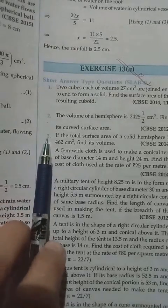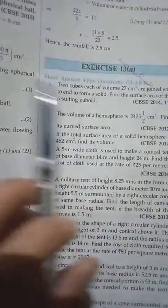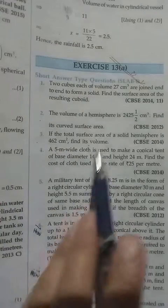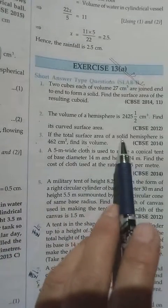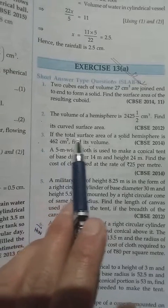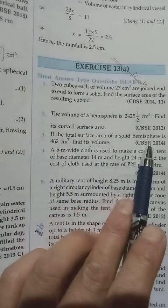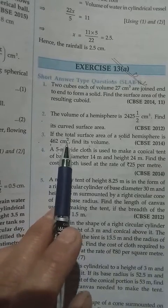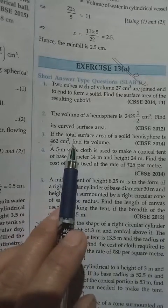Let us solve question 3 of exercise 13a mensuration regarding solid bodies. Here you see we have the shape of a solid hemisphere. They give us the total surface area of the hemisphere is equal to 462 cm square. Then what we have to find? We have to find the volume.